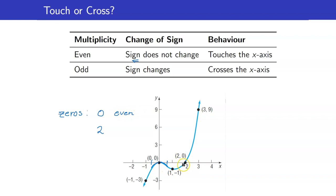Whereas, if you consider 2, on the left of 2 the y-coordinates are negative. However, on the right of 2, if we follow the graph, the y-coordinates are already positive. The sign changes, and this means that the graph crosses the x-axis. That happens when the multiplicity is odd.